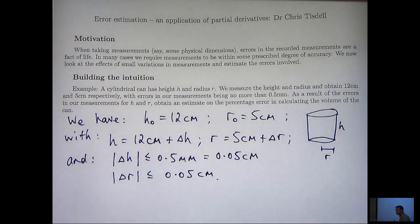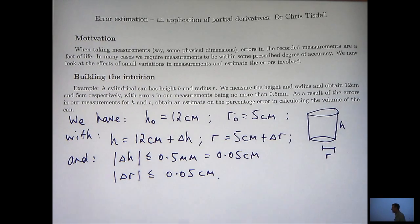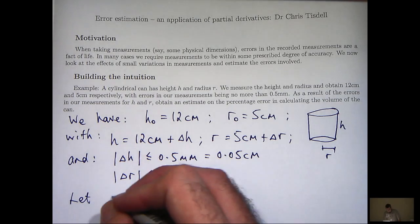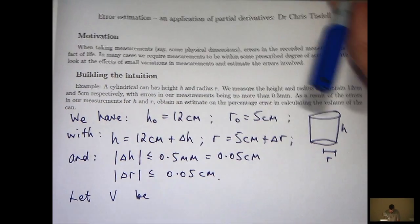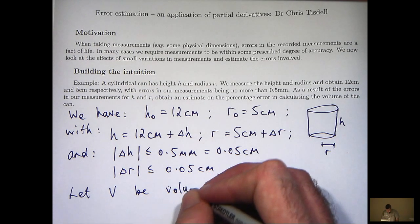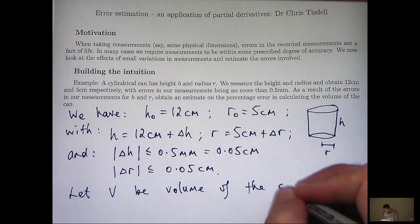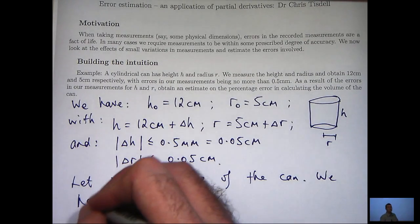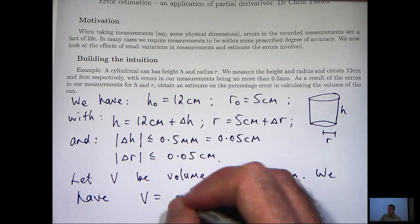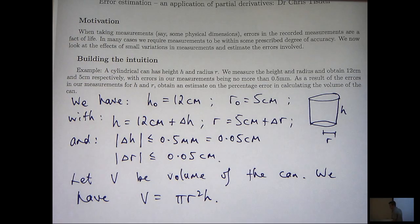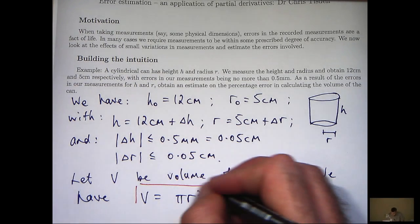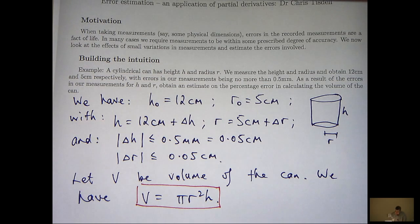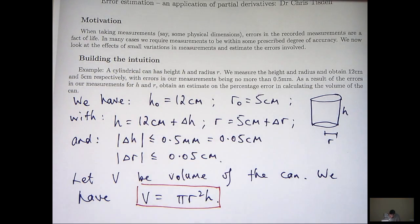Let's remind ourselves of the volume, how to calculate the volume for a cylindrical can. Let V be the volume of the can. We have V equals pi r squared h. This is an important equation that we'll come back to. But what we're actually interested in is the error or the difference between the actual volume of the can and our computed volume of the can based on these measurements.